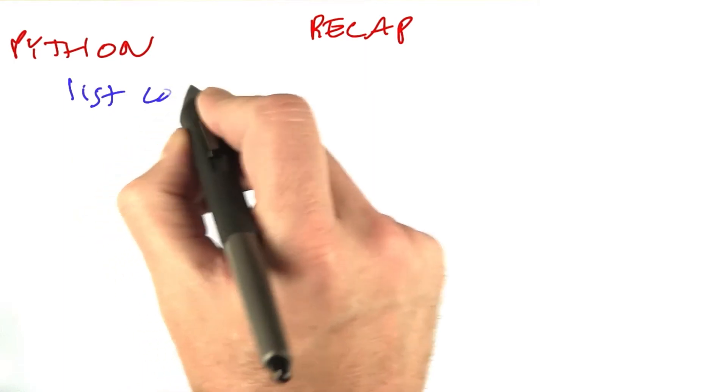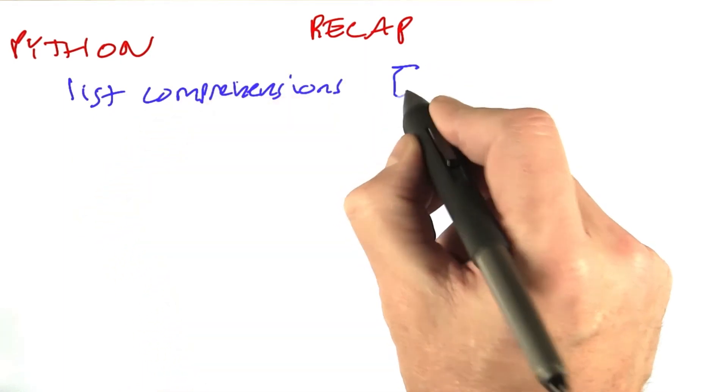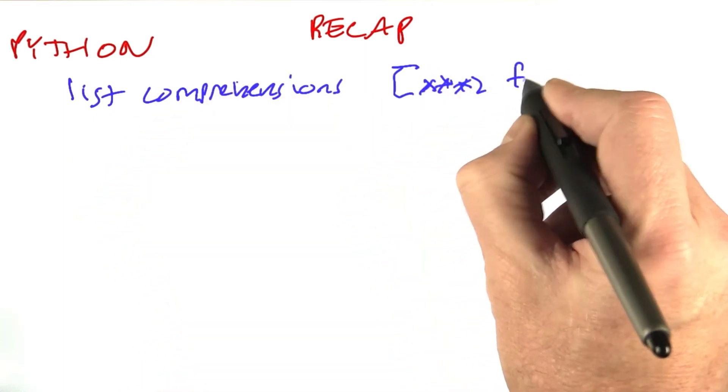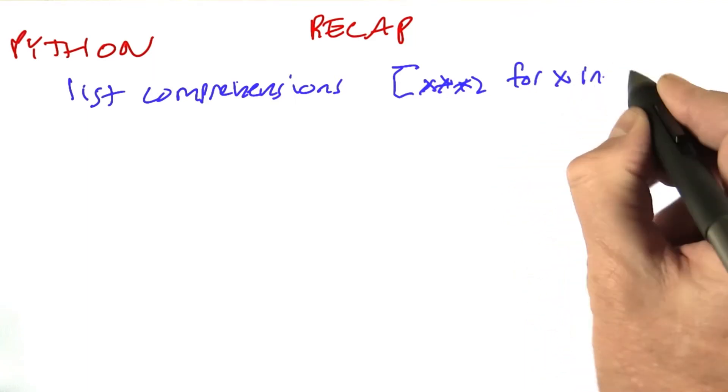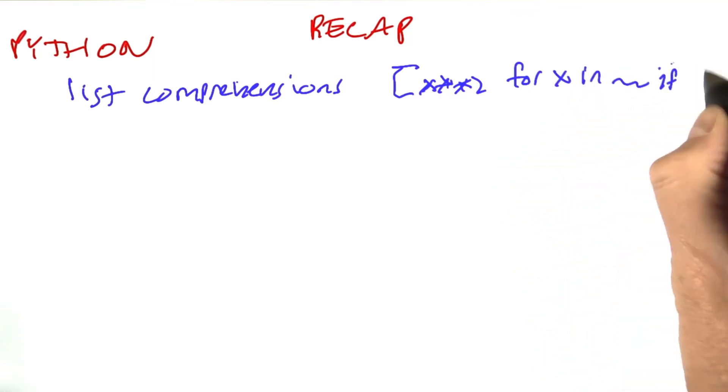We used complex list comprehensions, and that's something like x squared for x in blah, blah, blah, if something.